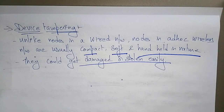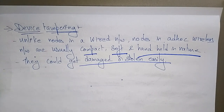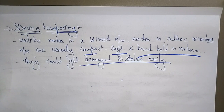These are all the different network security attacks: jamming, wormhole, black hole, Byzantine, information disclosure, resource consumption, routing attack, session hijacking, repudiation, denial of service, impersonation, manipulation of network traffic, and device tampering. Thank you.